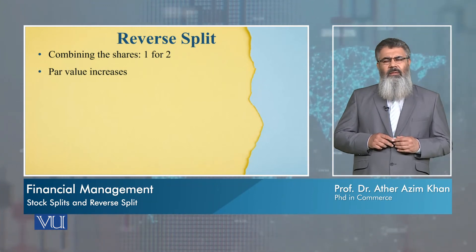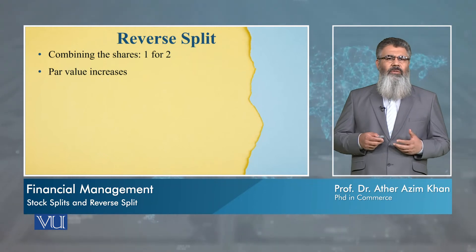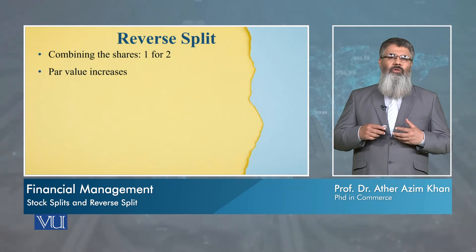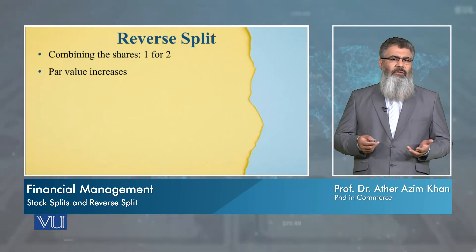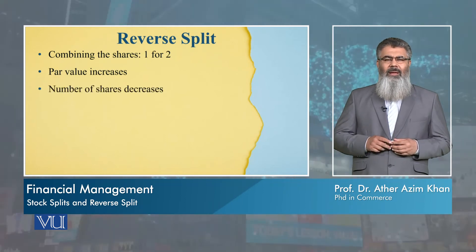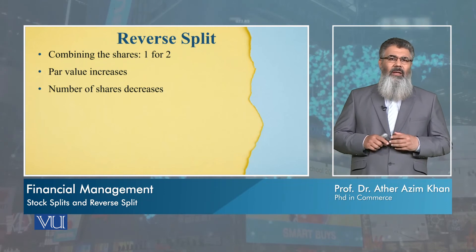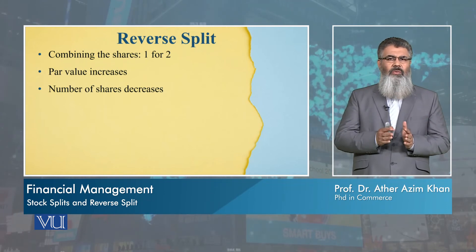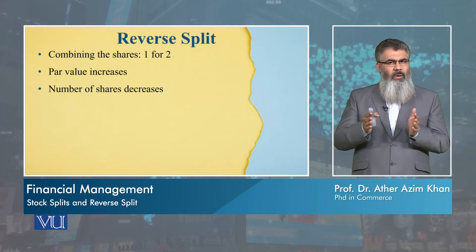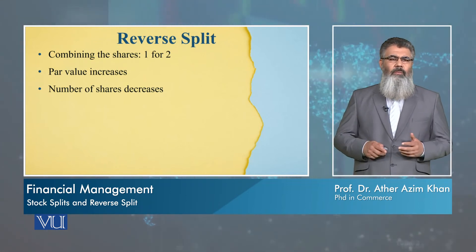With a reverse split, the par value of the share increases. It definitely becomes twice if it is 1-for-2. If it is 1-for-4, then it will become four times, and likewise you can relate the ratio of the reverse split. The number of outstanding shares will decrease. Because when 2 shares are replaced by 1 share, if we had 100,000 outstanding shares, they will decrease to 50,000, and likewise you can relate the proportion.